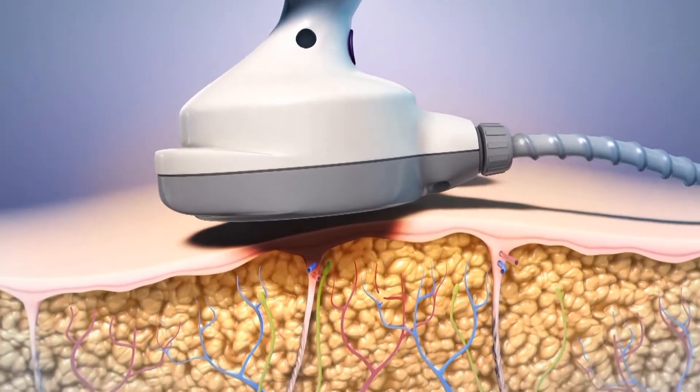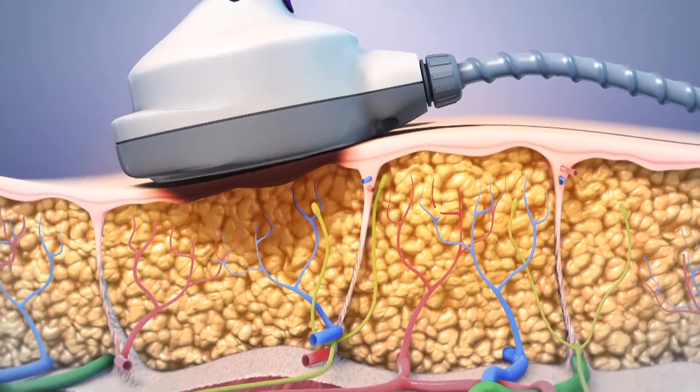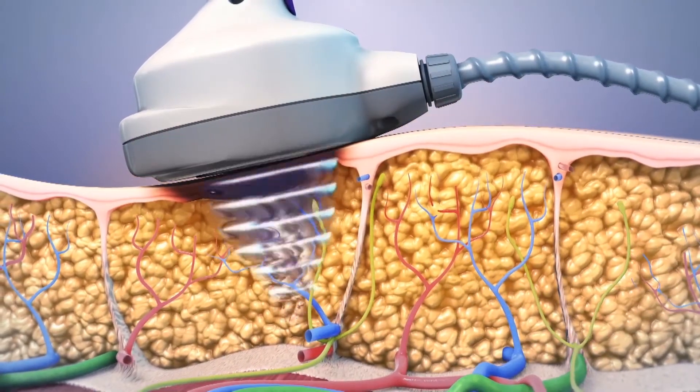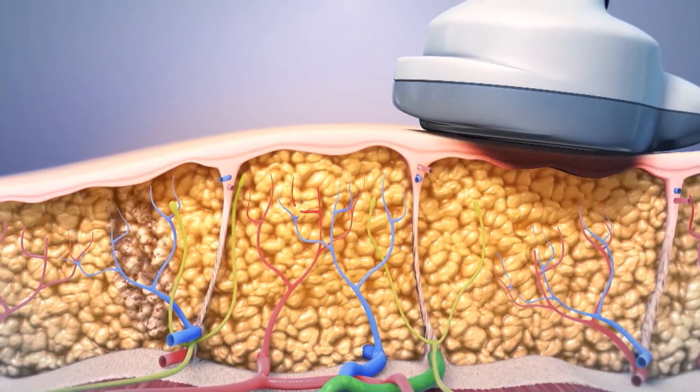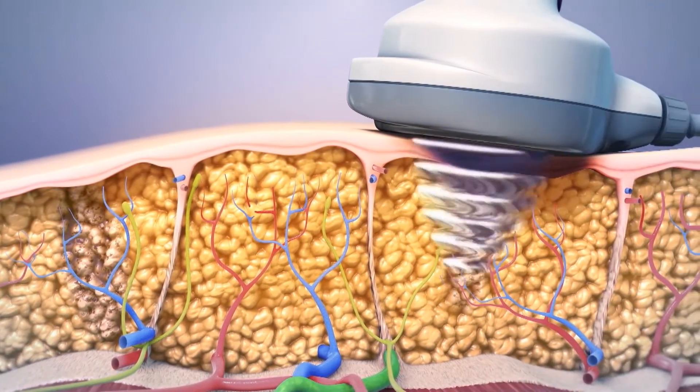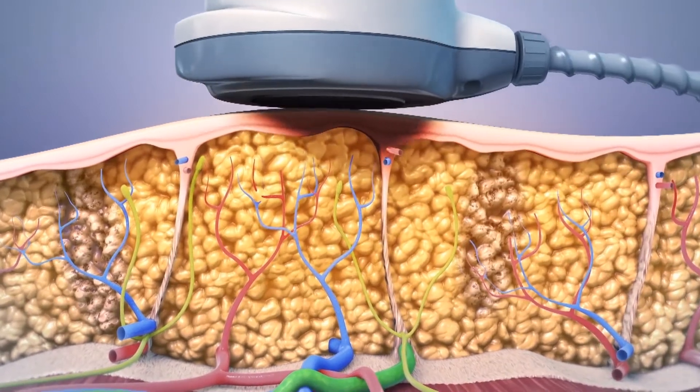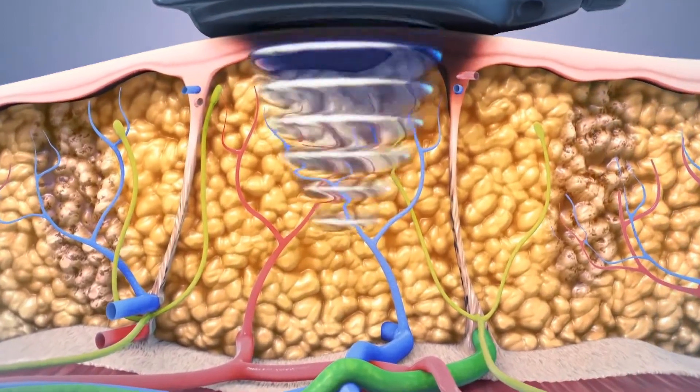Once the transducer is positioned on the surface of the skin, ultrasound energy is delivered. Acoustic waves of energy are focused at a point 1.5 cm below the skin surface, similar to how a magnifying glass can focus a point of light.